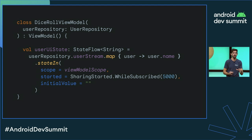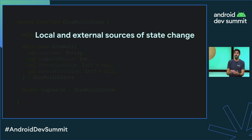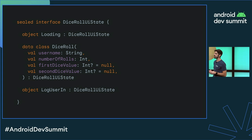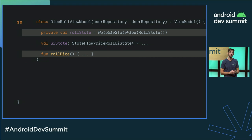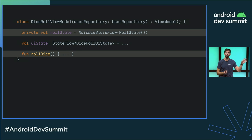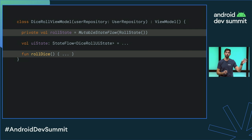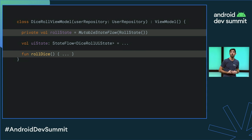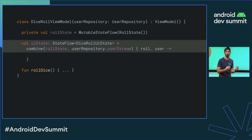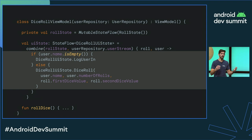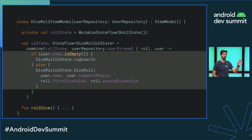What if we need to combine local and external sources of state change? Imagine we only allow the user to roll the dice if they are logged in. The UI state has loading, LogUserIn, and dice roll states. The username and number of rolls come from the data layer, and dice values are obtained locally as before. We model the local source as a MutableStateFlow roll state, updated when rollDice is called. We then use the combine function to merge roll state with the user stream: if the username is empty, we emit the LogUserIn state; otherwise we build the DiceRollUiState combining username and number of rolls from the data layer with dice values obtained locally.